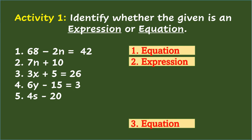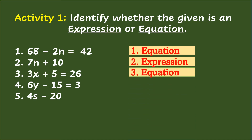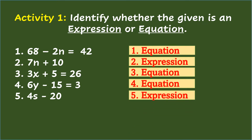Number 4: 6y minus 15 equals 3 — the answer is Equation. Number 5: 4s minus 20 — the answer is Expression.